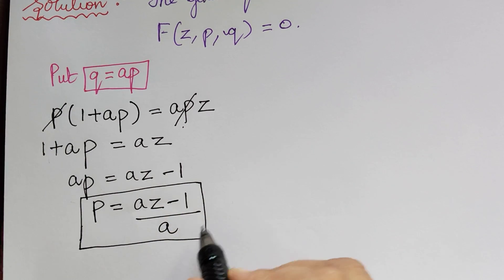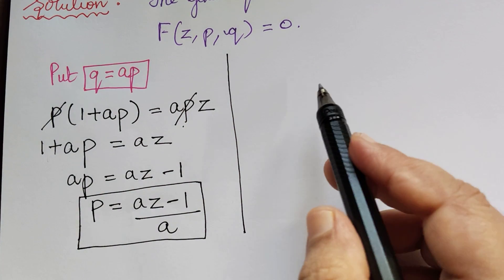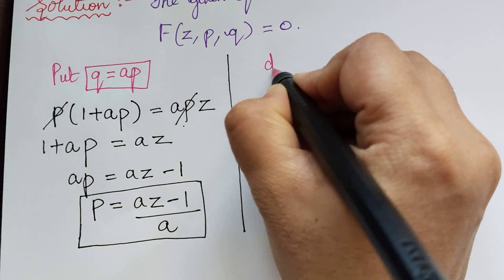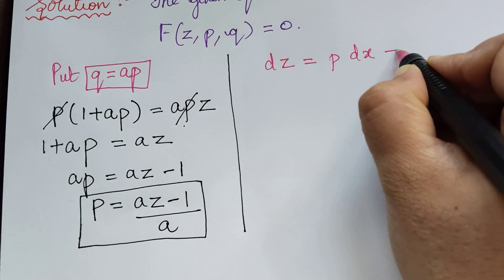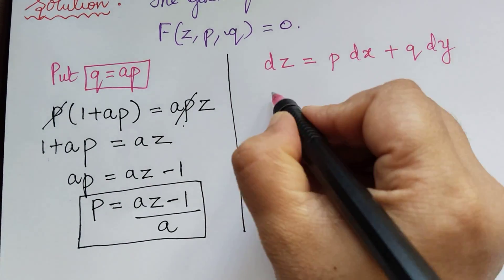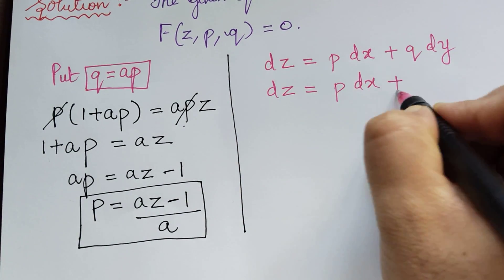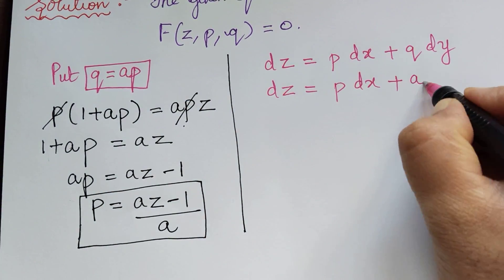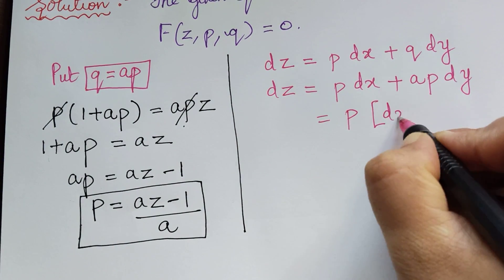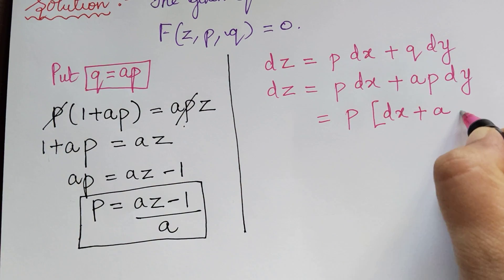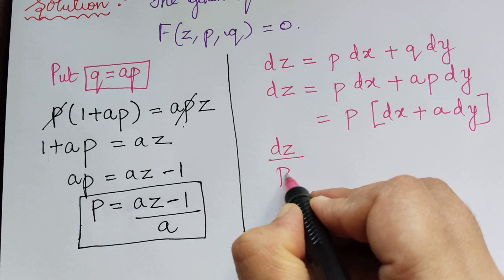Now we substitute the values of p and q into the total differential equation. We know that dz = p dx + q dy. Since q = ap, this becomes dz = p dx + ap dy. Taking p common, we get dz = p(dx + a dy), so dz/p = dx + a dy.